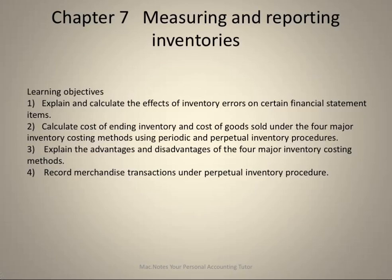Chapter 7: Measuring and Reporting Inventories. Our learning objective for this chapter is to explain and calculate the effects of errors on financial statements. In the next video, we will look at how we calculate the cost of ending inventory and the cost of goods sold under four different inventory costing methods. Then we'll look at recording merchandise transactions.